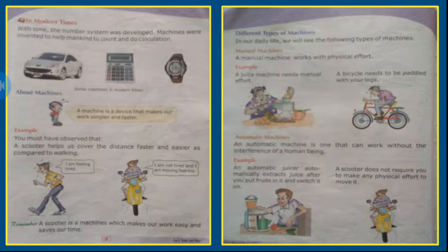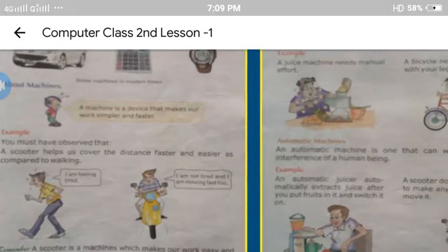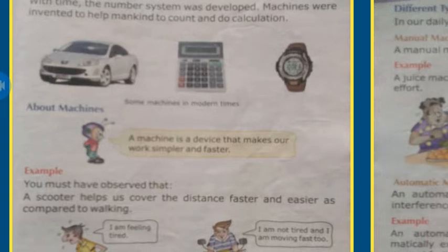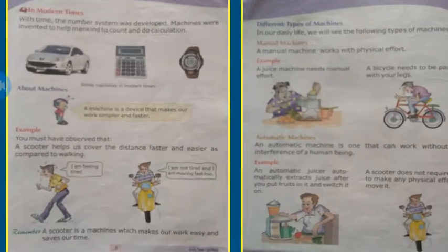Now, in modern times, with time the number system was developed. Machines were invented to help mankind to count and do calculations. Some machines in modern times include cars, calculators, watches, and other machines. Do you know, students, what is a machine? A machine is a device that makes our work simpler and faster.